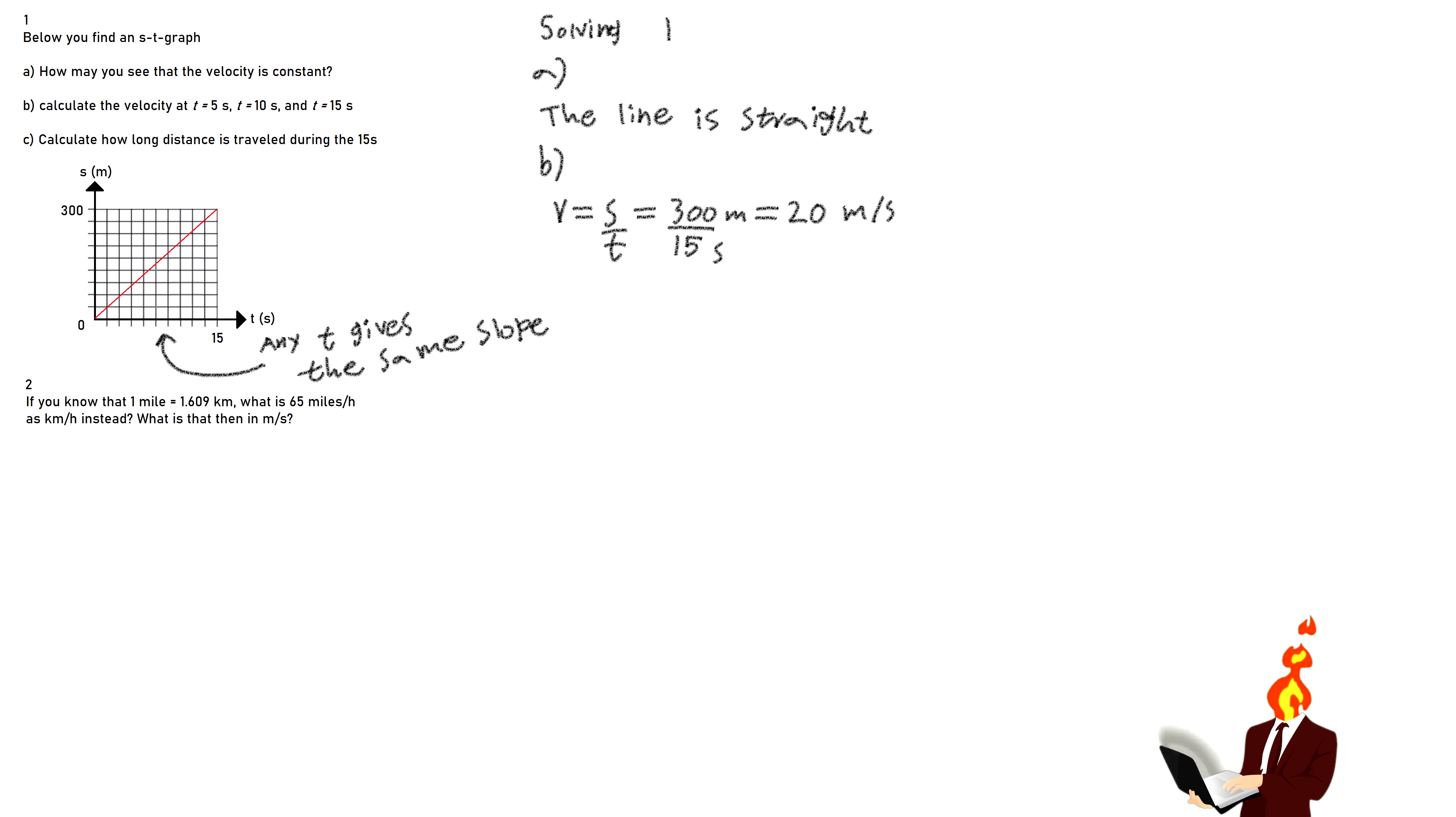Part B. Calculate the velocity at T equals 5 seconds, T equals 10 seconds, and T equals 15 seconds. The answer is that since the velocity is constant, as we've already previously established, that means that at all of these points in time, the velocity is the same. It's enough that we calculate the velocity at just one of these points to know the answer to all three. We might as well take the point at 15 seconds.